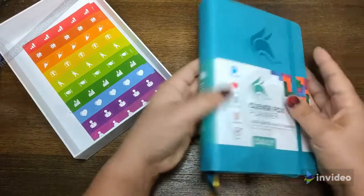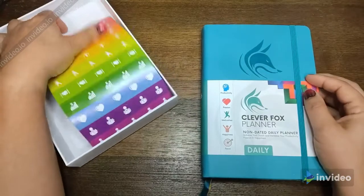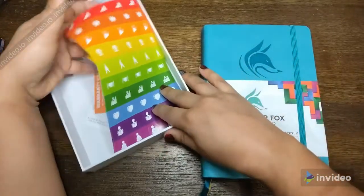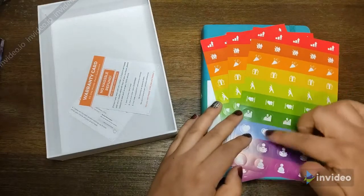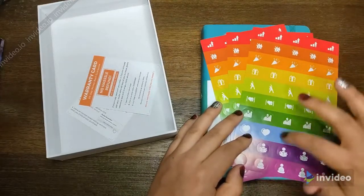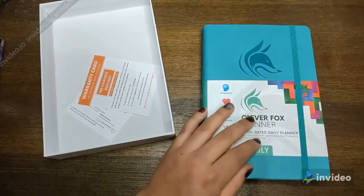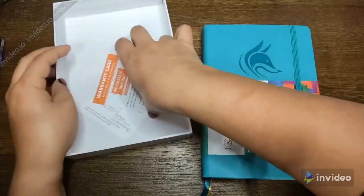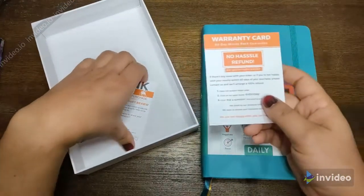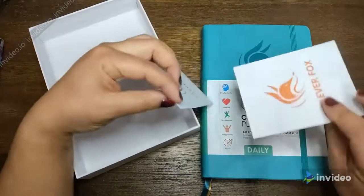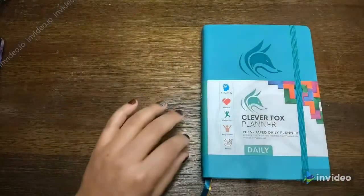It's pretty thick, this is an A5 size. It looks like it came with some fun little stickers, like little productivity stickers and maybe for different activities, birthdays, exercise, etc. Also a warranty card and some other thank you for your purchase information.